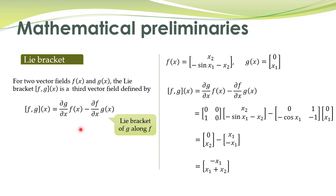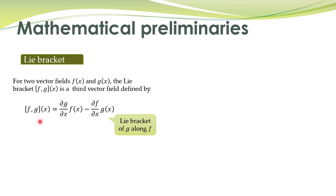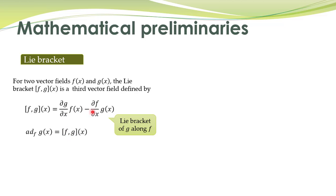There is another notation for the same thing, which is sometimes more convenient. We also write this Lie bracket using the adjoint notation. This is another notation for the same Lie bracket. We read it the adjoint of g along f, which is the same as the Lie bracket of g along f, given by this expression.